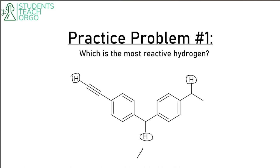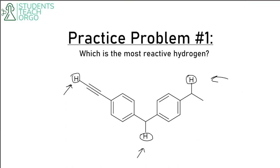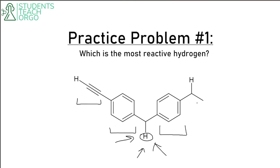You should choose the benzylic hydrogen with two benzyl groups. This one has two benzyl groups for stability, versus the other which has only one. Alkenyl groups stabilize at 544 kcal/mol, while benzylic is 372. So the hydrogen with two benzyl groups is the most reactive, because the stability of two benzyl groups greatly outranks one alkenyl group and one benzyl group.